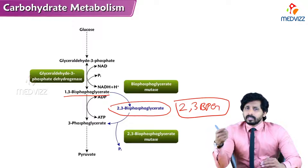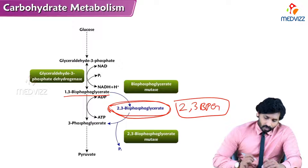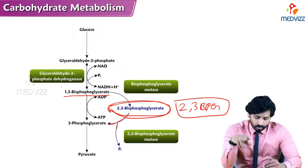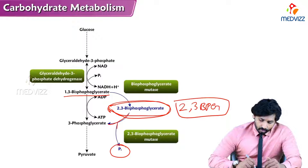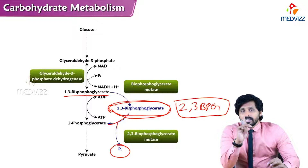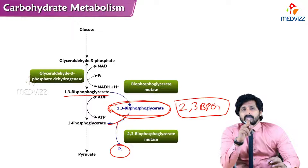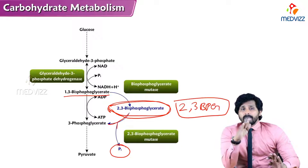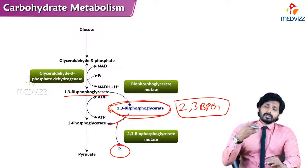This 2,3-BPG is then converted back to 3-phosphoglycerate, and the phosphate attached to the second carbon of 2,3-BPG is released as inorganic phosphate with the help of enzyme 2,3-bisphosphoglycerate mutase. In the original glycolysis reaction, 1,3-bisphosphoglycerate converts to 3-phosphoglycerate and the removed phosphate is accepted by ADP to form ATP. But here in the Rapoport-Luebering cycle, instead of the straight route, 1,3-BPG converts to 2,3-BPG and then to 3-phosphoglycerate, releasing phosphate as inorganic phosphate rather than donating it to ADP to form ATP.